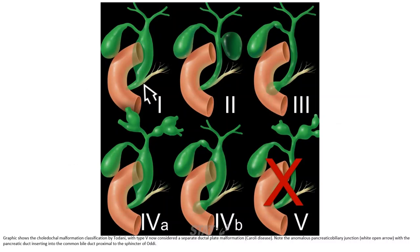This graphic shows the choledochal cyst classification by Todani, with Type 5 now considered a separate entity called Carol's disease or ductal plate malformation. Note the anomalous pancreatic biliary junction with the pancreatic duct inserting into the common bile duct proximal to the sphincter of Oddi.